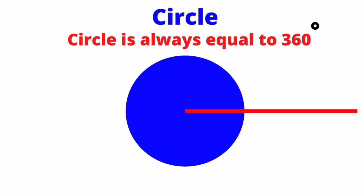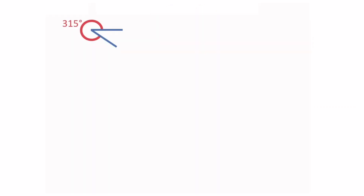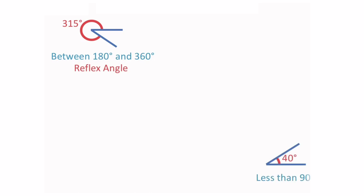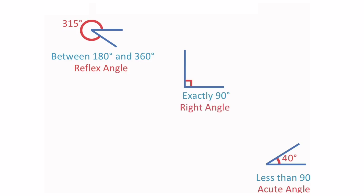A circle is always equal to 360 degrees. This angle is between 180 and 360 degrees, so it is a reflex angle. This angle is exactly 40 degrees, which is less than 90, so it is called an acute angle. This angle is exactly 90 degrees, so it is a right angle. This is a full turn, which is 360 degrees.